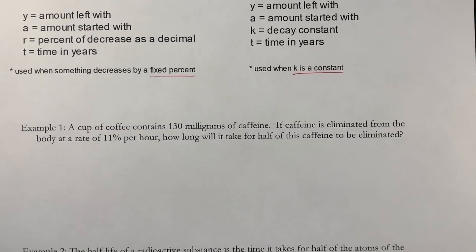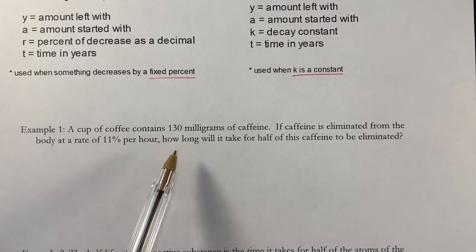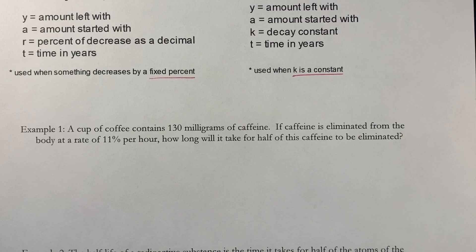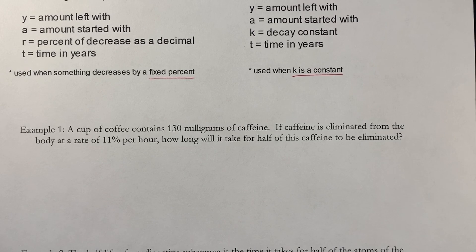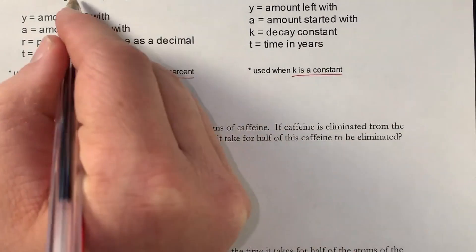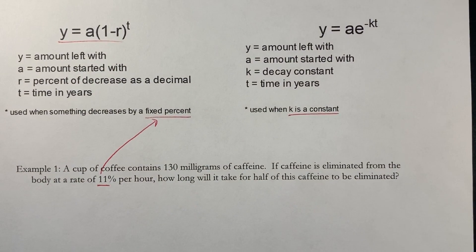Our first problem is about caffeine in coffee. A cup of coffee contains 130 milligrams of caffeine. If caffeine is eliminated from the body at a rate of 11 percent per hour, how long will it take for half of this caffeine to be eliminated? Since it's decreasing by 11 percent — a fixed percent — we're going to use the formula y = a(1 - r)^t.